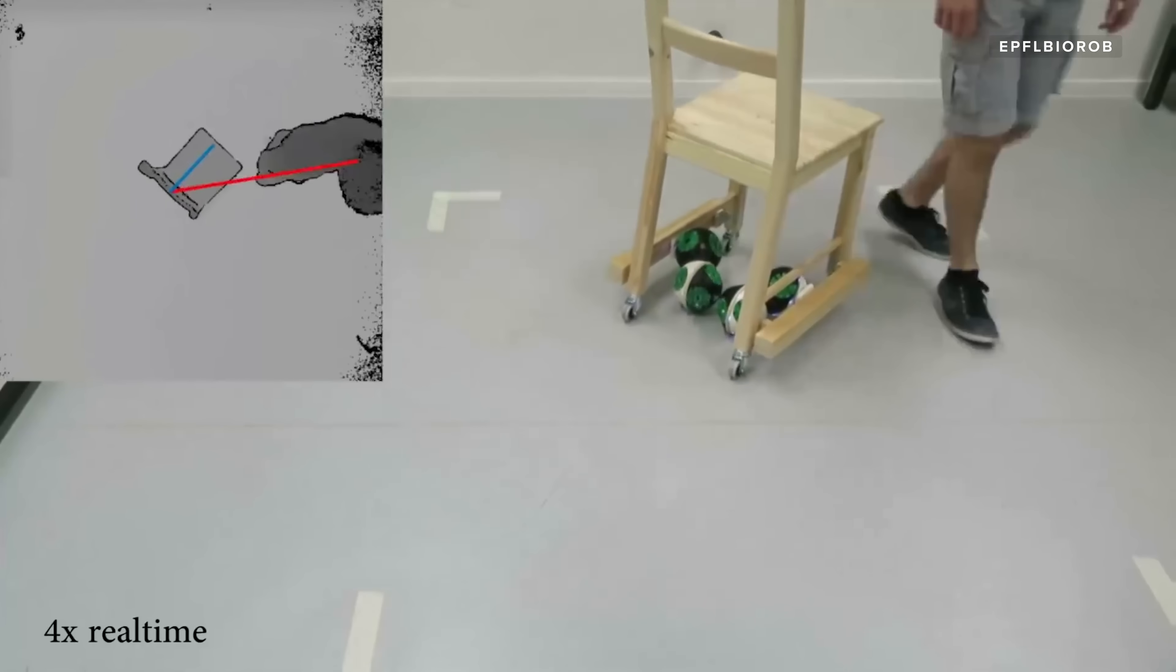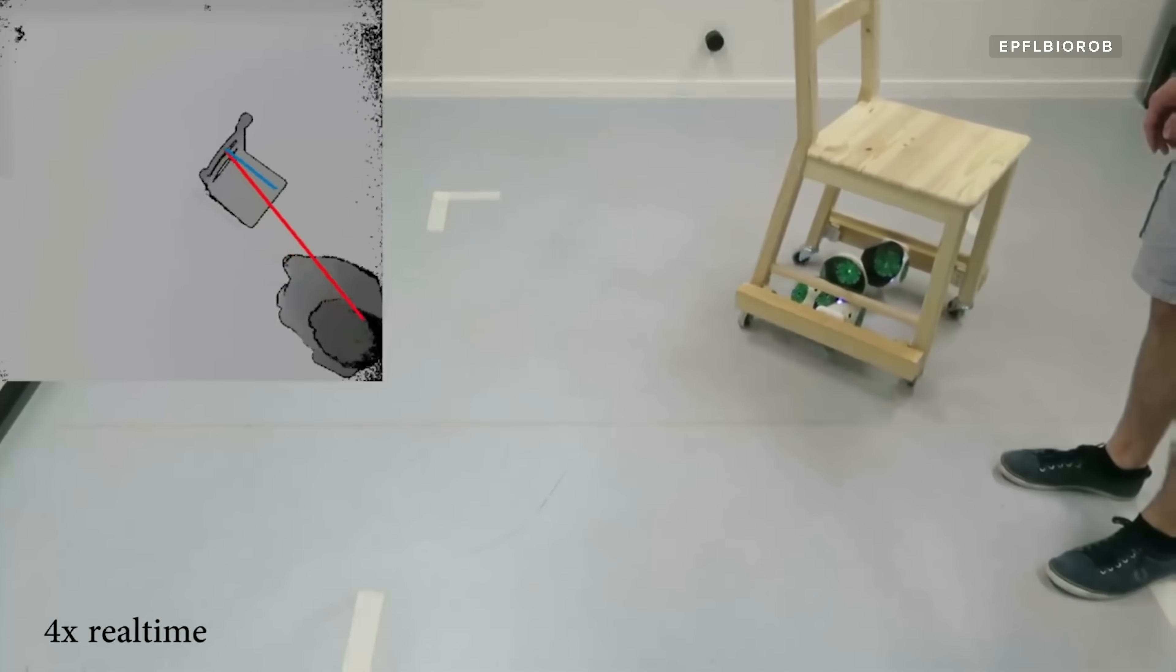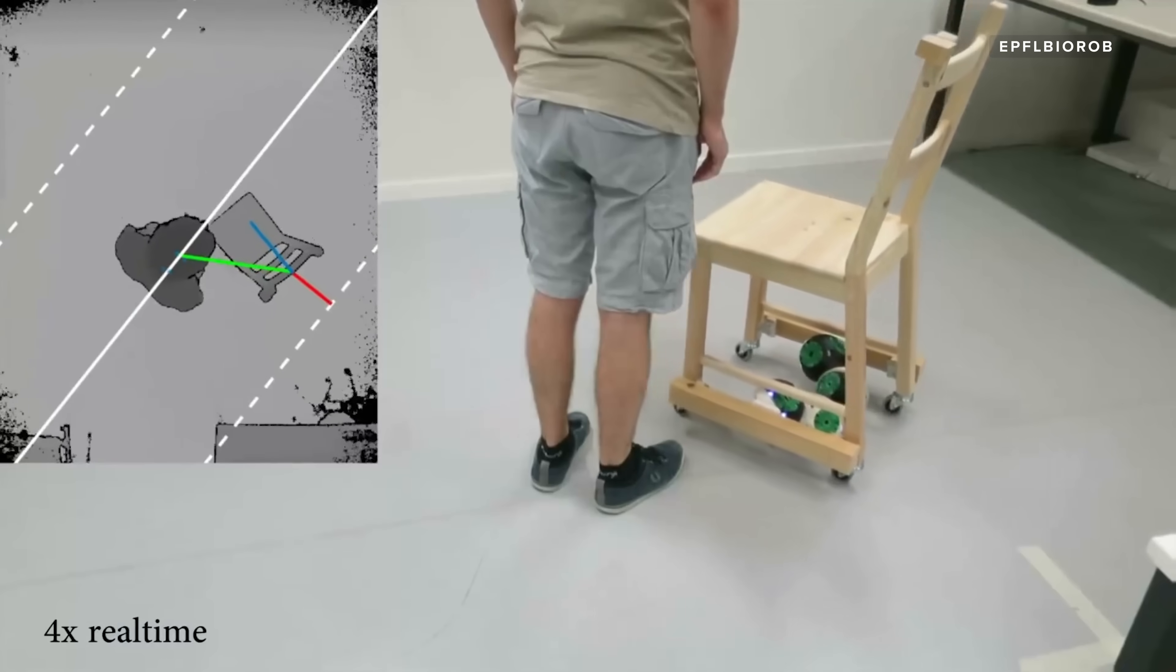When it comes to chairs, Roombots can push one around by rolling on the ground to follow you, or stay out of your hair.